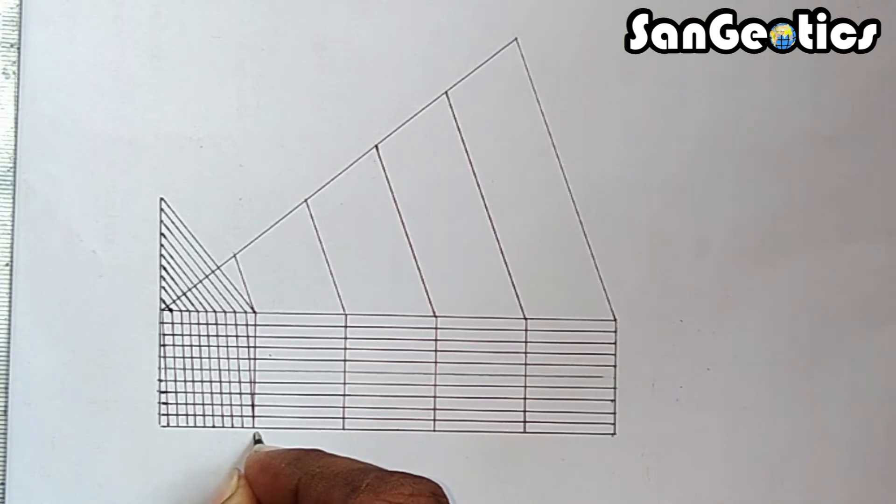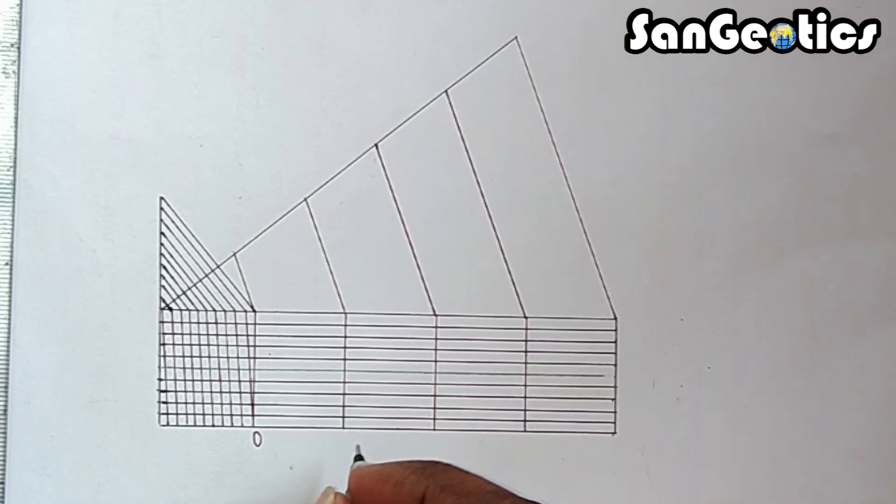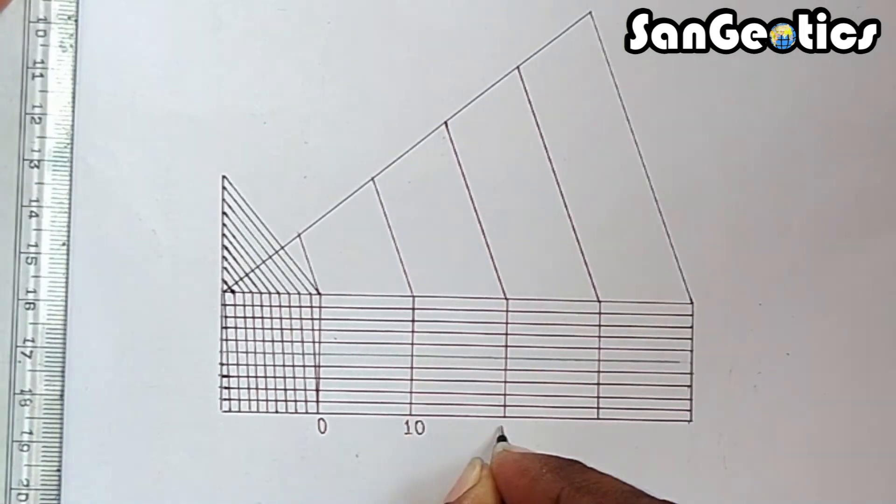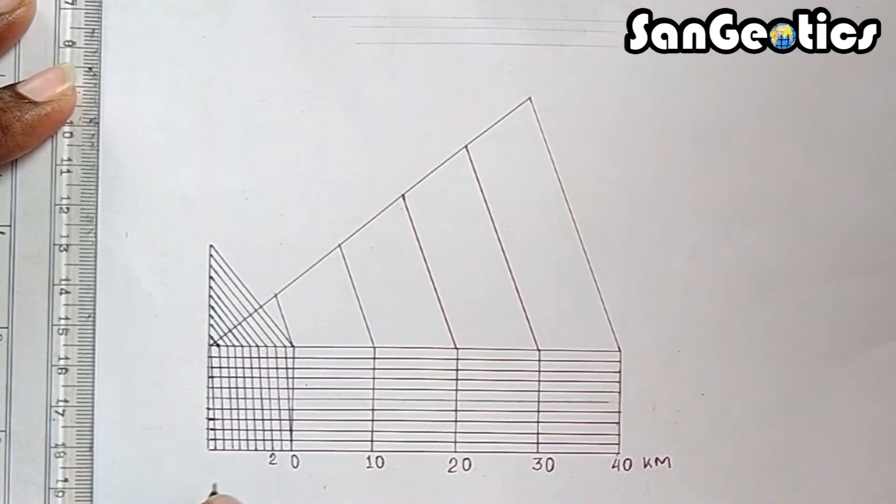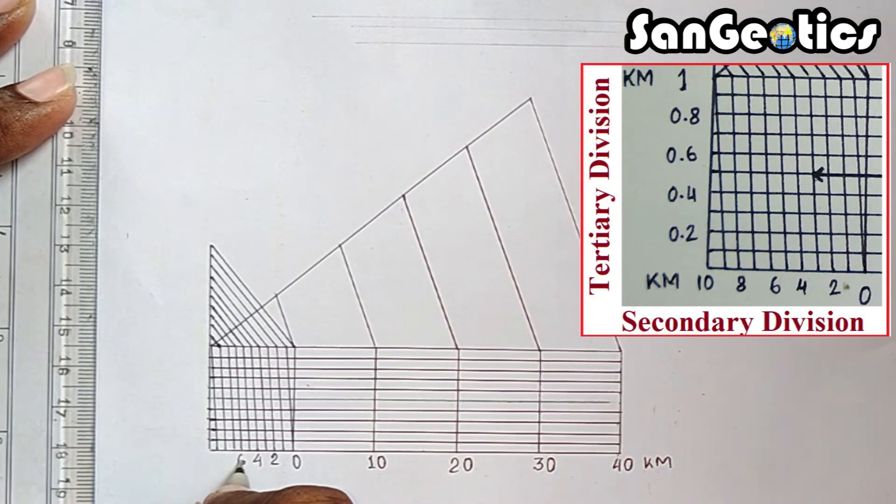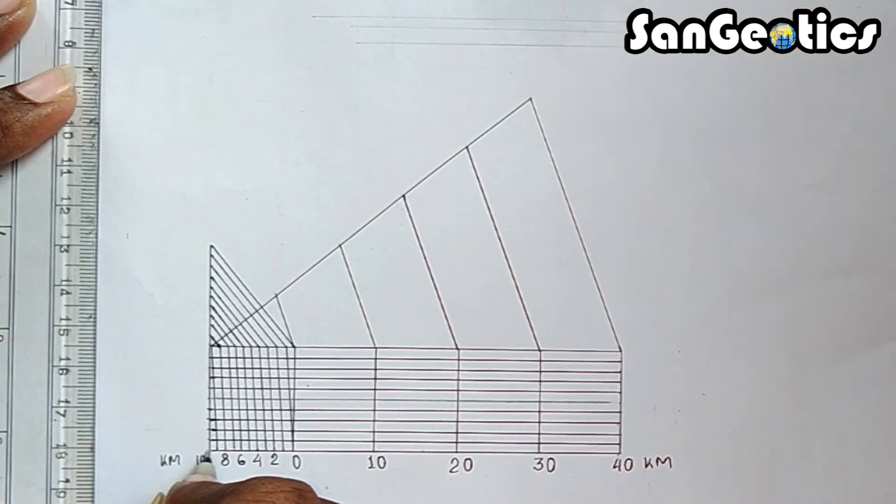Distance shown by primary and secondary divisions are marked at right and left of 0 respectively as 10, 20, 30 and 40 km and 2, 4, 6, 8 and 10 km.